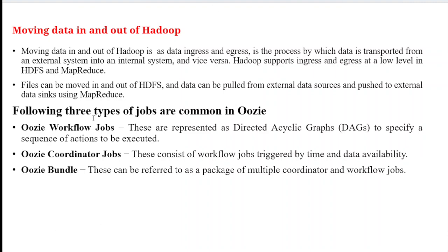The following three types of jobs are common in Oozie. Oozie is a very good example for coordinator and workflow jobs. Oozie workflow jobs are represented as directed acyclic graphs — DAGs — to specify the sequence of actions that have to be executed in sequential order.